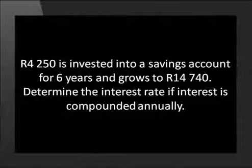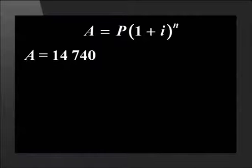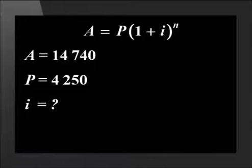Let's try an example where we need to calculate the interest using the compound interest formula. 4,250 rand is invested into a savings account for 6 years and grows to 14,740 rand. Determine the interest rate if the interest is compounded annually. A is equal to 14,740. P is equal to 4,250. We don't know the value of i yet. And n is equal to 6.